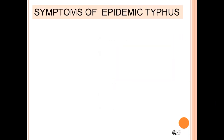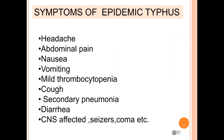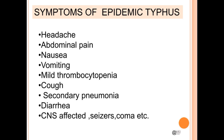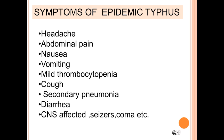Symptoms of epidemic typhus include headache, abdominal pain, nausea, vomiting, mild thrombocytopenia, cough, secondary pneumonia, diarrhea, central nervous system affected, seizures, and coma, etc.